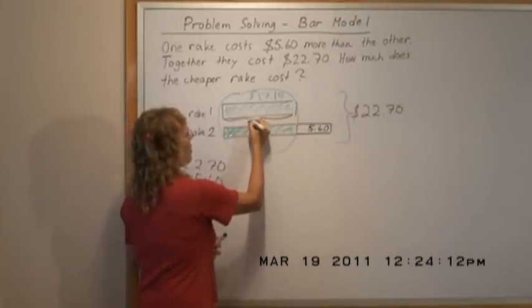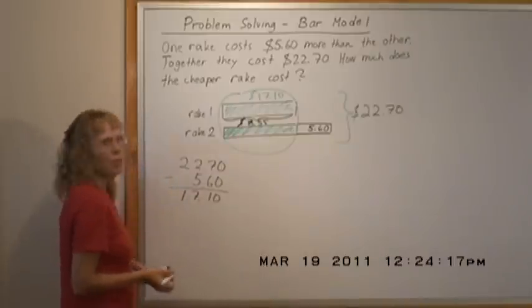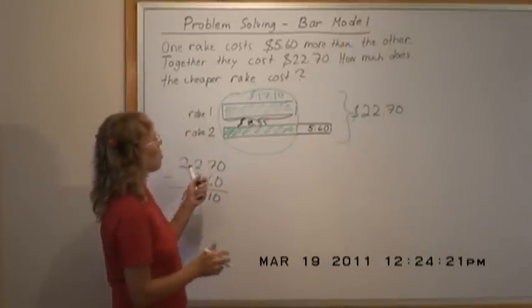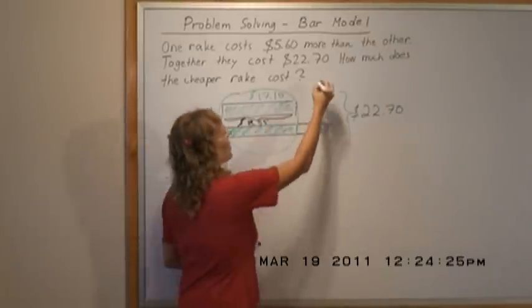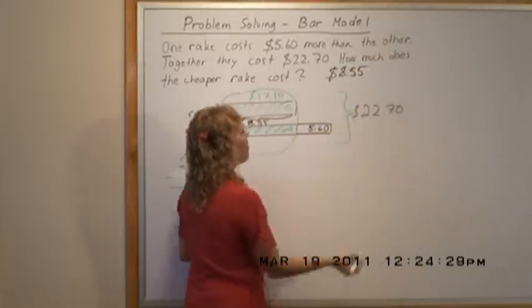And what did the problem ask for? It asked for the price of the cheaper rake, which is this $8.55. So the answer is right there, we have it now: $8.55.